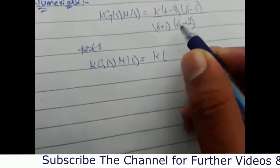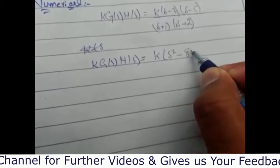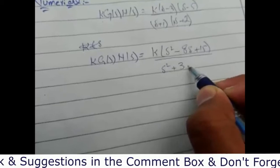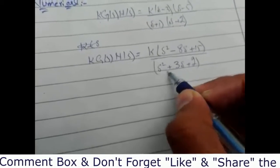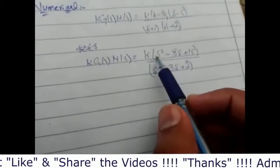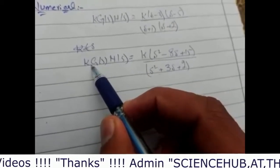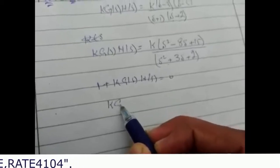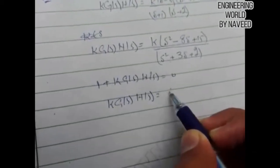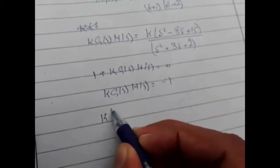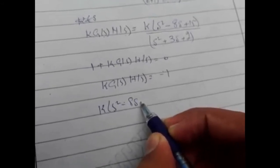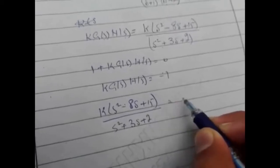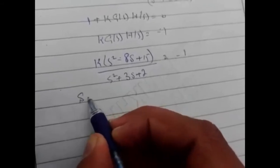G(s)·H(s) is equal to K multiplied by (s² minus 8s plus 15) divided by (s² plus 3s plus 2). Now, equating it to minus 1 — as I discussed in my previous video, from 1 plus K·G(s)·H(s) equal to 0, we get K·G(s)·H(s) equal to minus 1. So equating (s² minus 8s plus 15) divided by (s² plus 3s plus 2) equal to minus 1.